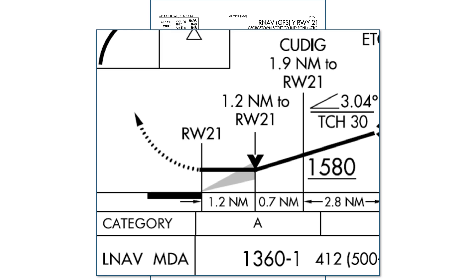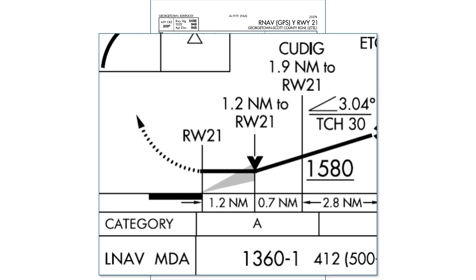This one is located 1.2 miles from the runway threshold, which we identify in the cockpit with our GPS. Sometimes they'll be identified with something like a DME or a cross radial. The idea of having a VDP is to identify the last point on the approach from where a normal descent can be made from the MDA to the touchdown zone.